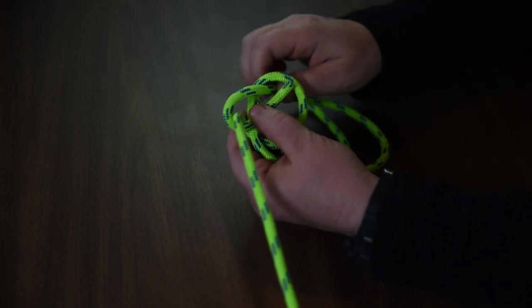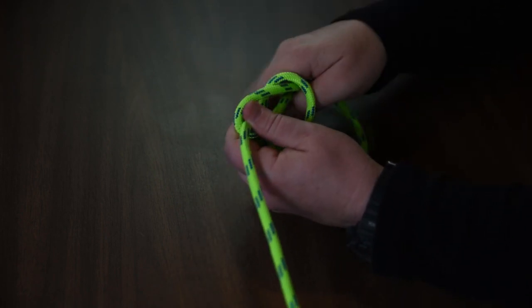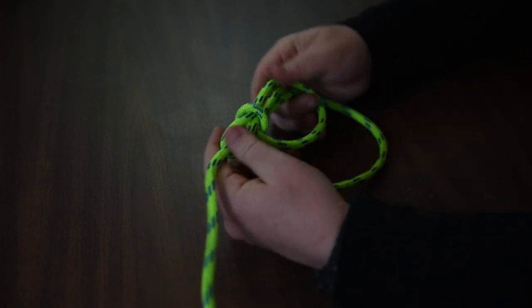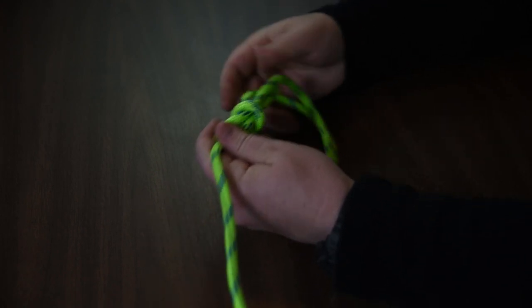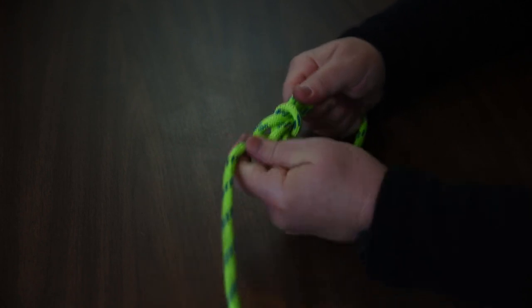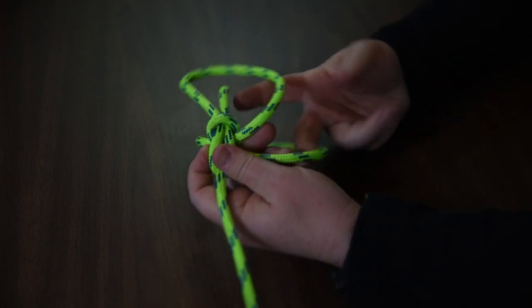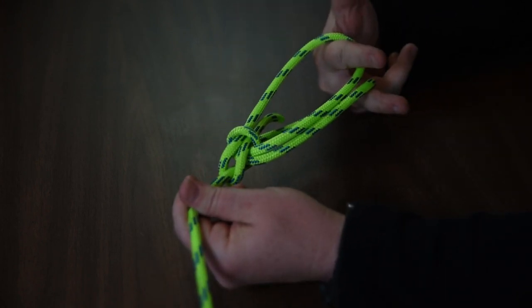Then we go through the loop, the original loop that we made. We tighten it up and we can adjust the two loops so that they're the right length. Pull it tight and you've got two loops for the French bowline.